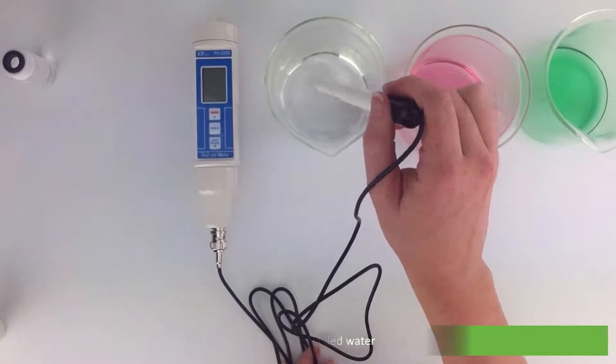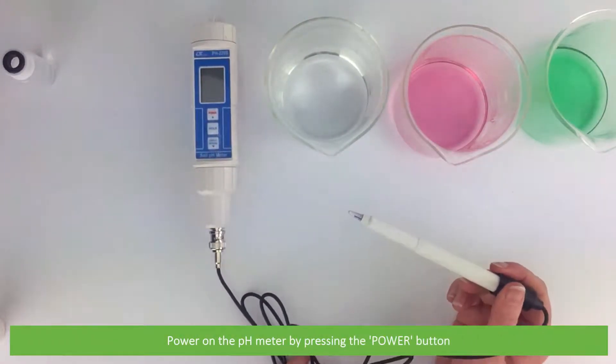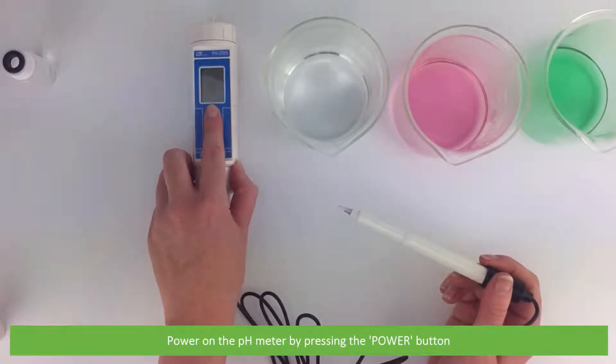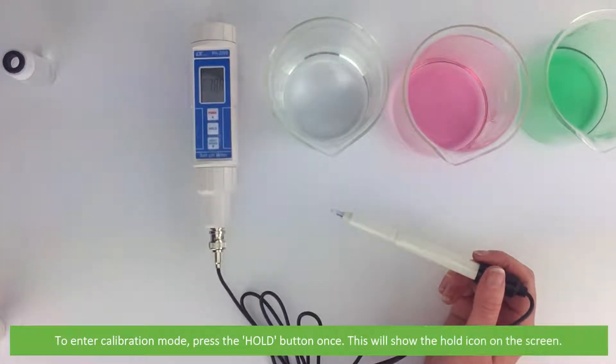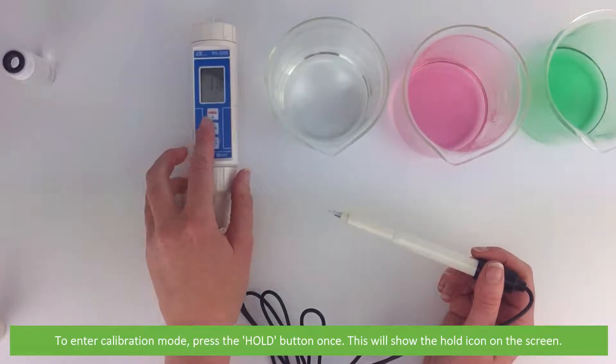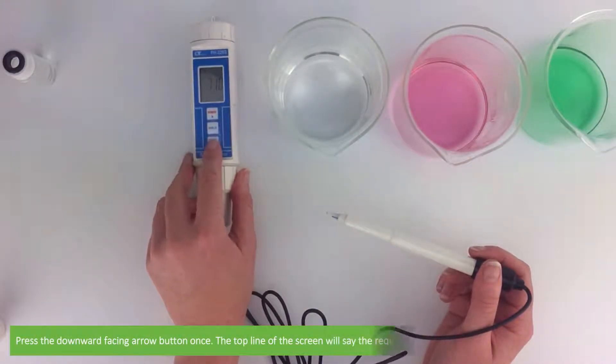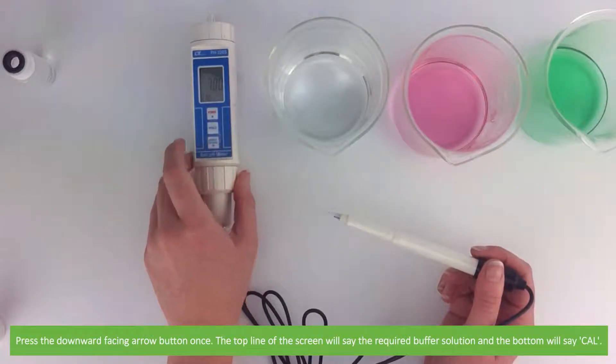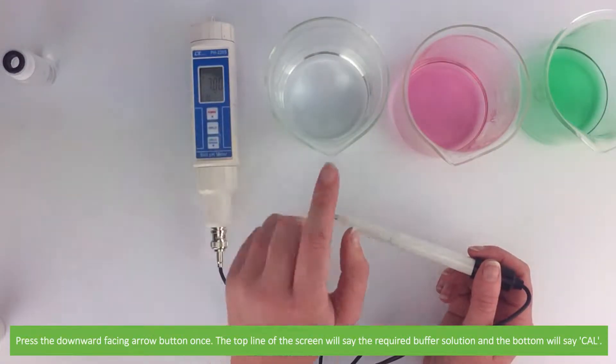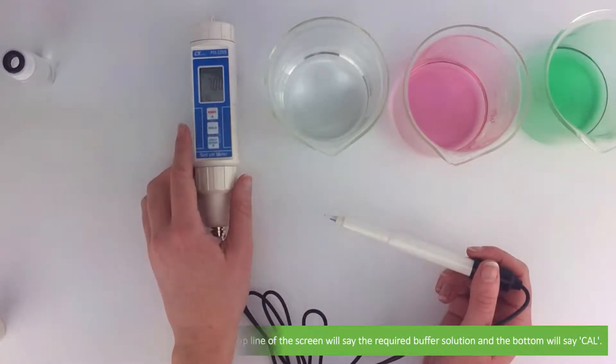Power on the pH meter by pressing the power button. To enter the calibration mode, press the hold button once. This will show the hold icon on the screen. Then press the downward facing arrow button once. The top line of the screen will say the required buffer solution and the bottom of the screen will say CAL.